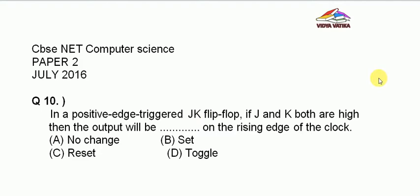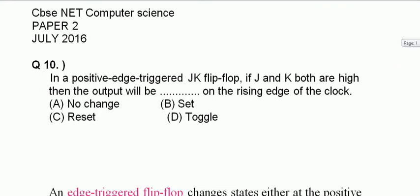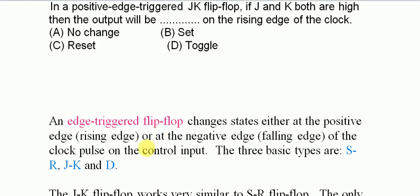Edge triggered flip-flop is the one which changes state either at the positive edge or at the negative edge of the clock pulse on the control input. Basically, the positive edge triggered flip-flop changes state at the rising edge of the clock pulse, and the negative edge changes state at the falling edge of the clock pulse. There are three basic types of flip-flop: SR, JK, and D, and these flip-flops can either be positive or negative.